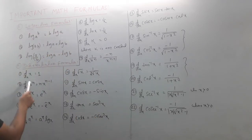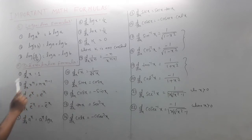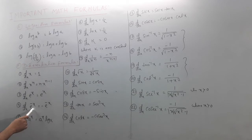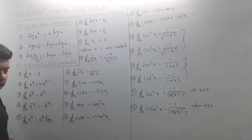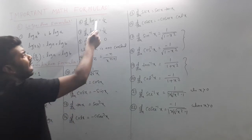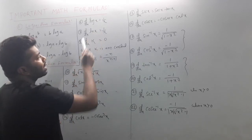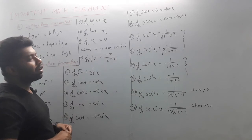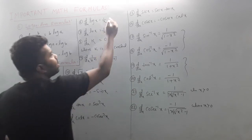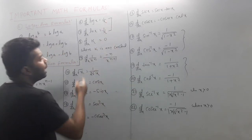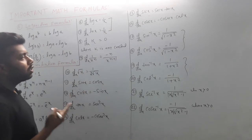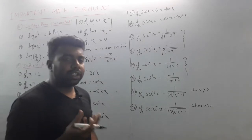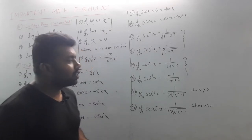First differentiation formula: d/dx of x = 1. d/dx of xⁿ = n·xⁿ⁻¹. d/dx of eˣ = eˣ. d/dx of e⁻ˣ = -e⁻ˣ. d/dx of aˣ = aˣ·log(a). d/dx of log(x) = 1/x. d/dx of any constant k = 0.